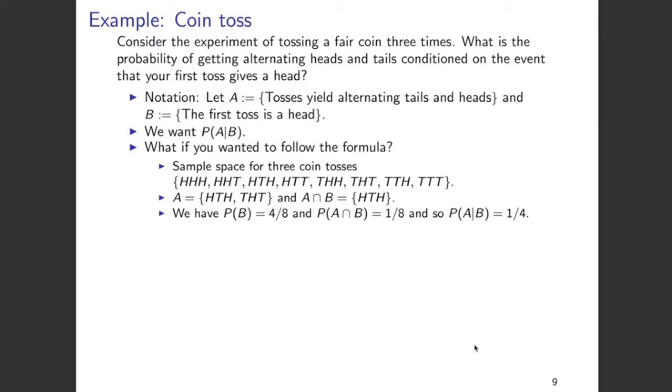The probability of A intersection B is 1 over 8, because A intersection B is just HTH. There is only one element, and the entire sample space has eight elements.